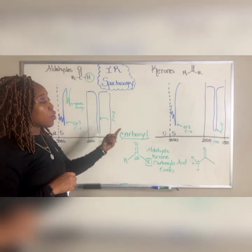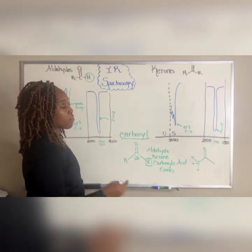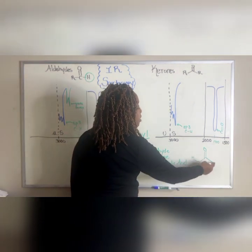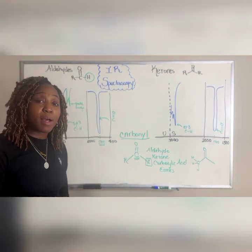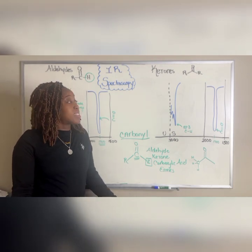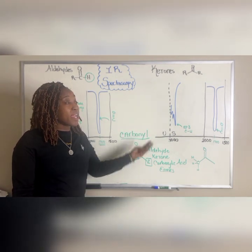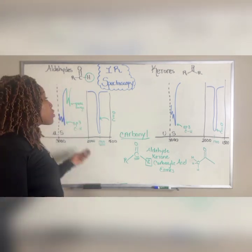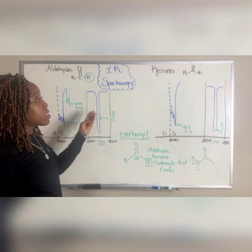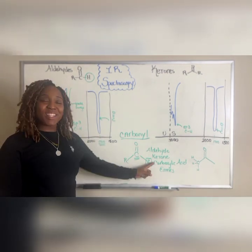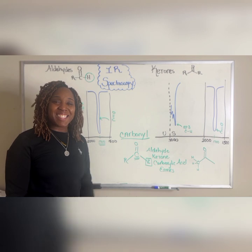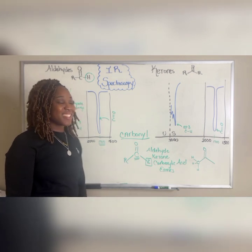For ketones, that's all you really have going on — just the carbonyl and the SP3 C–H bonds. There's nothing more required for ketones. So those are the differences between aldehydes and ketones. Next up: carboxylic acids and esters.